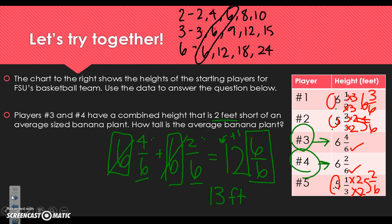Let's go back and figure out what the problem is asking. Players 3 and 4 have a combined height that is 2 feet short of an average-sized banana plant. If this height of 13 feet is 2 feet shorter than the average-sized banana plant, we need to add 2, so an average-sized banana plant is 15 feet tall.